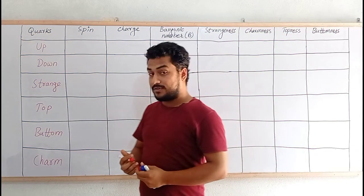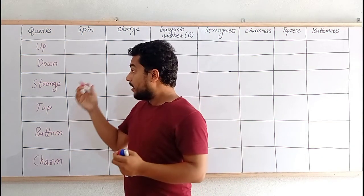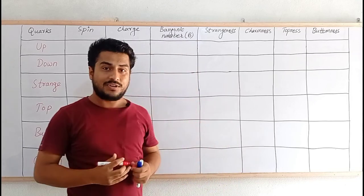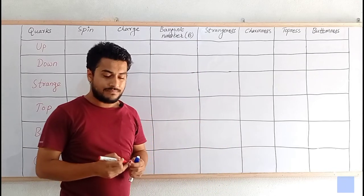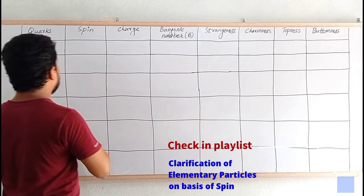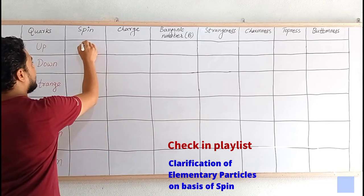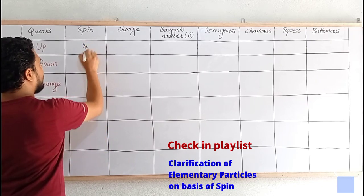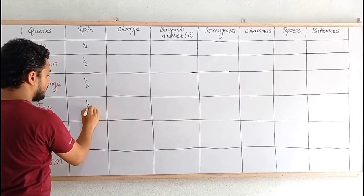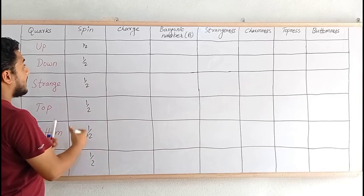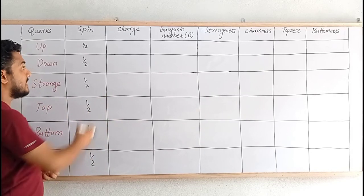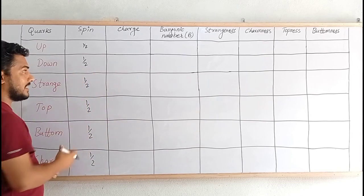Let's talk about the spin. All of the quarks do possess half-integral spin because they all are fermions. So we can write all of them as having spin 1/2, and every anti-quark also possesses half-integral spin.